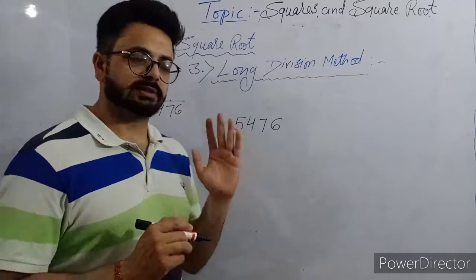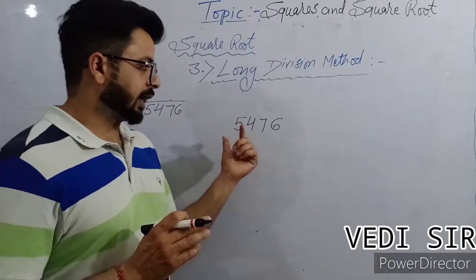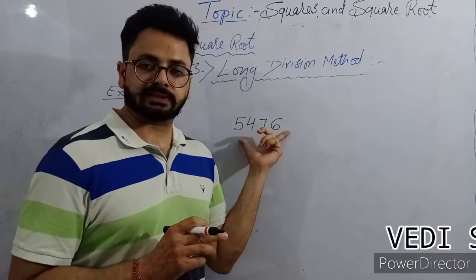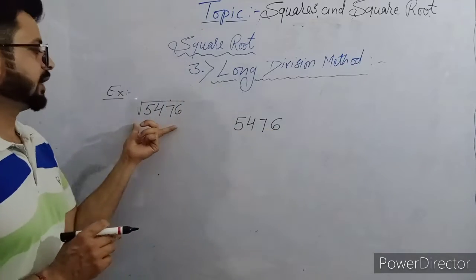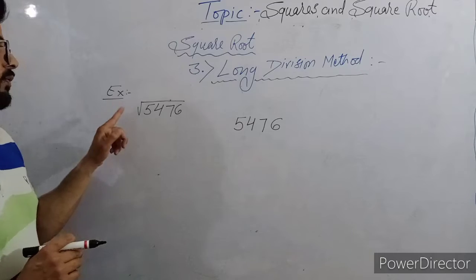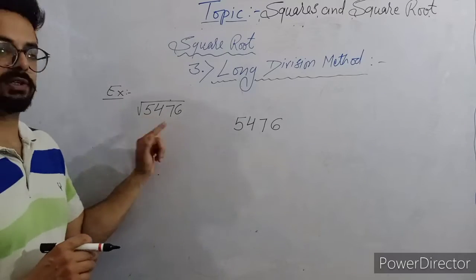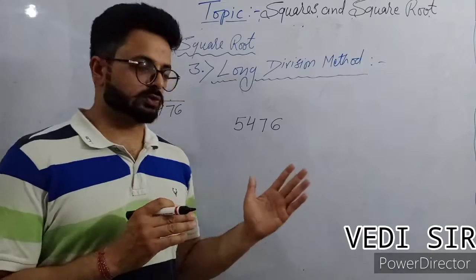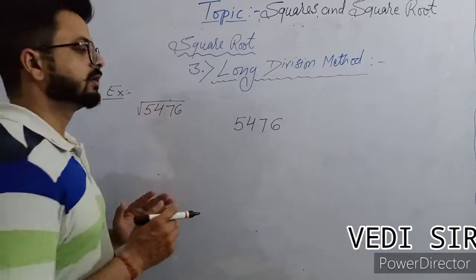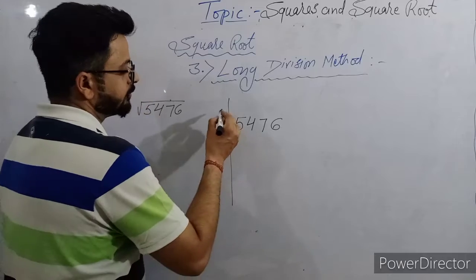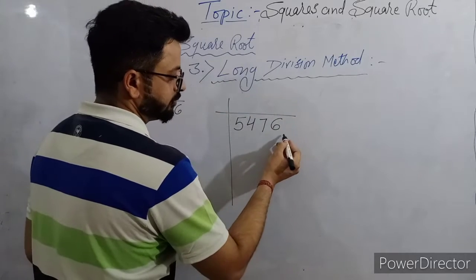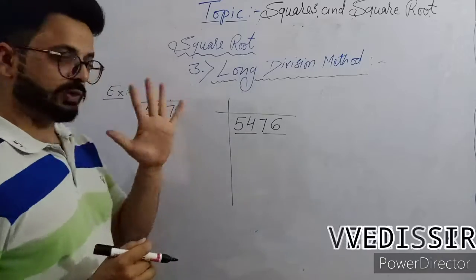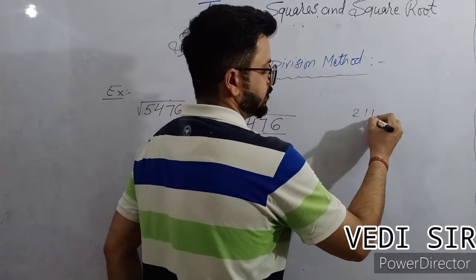Listen properly — I am going to explain this method with the help of an example. If I want to find out the square root of 5,476, we are talking about perfect square numbers. This is a perfect square number. First of all, we'll start to make periods from this side — two pairs. Suppose there are five digits: one, two, three — this is five digits, then at last one can also be left.